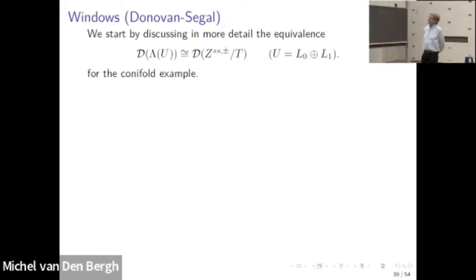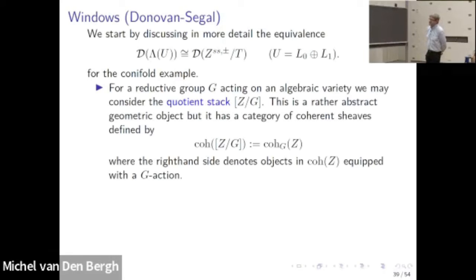Before I told you we have a derived equivalence — a non-commutative ring being derived equivalent to a resolution of a quotient singularity — but I didn't tell you what the equivalence was. One can construct the equivalence directly, but it's better to think about it from the point of view of windows. The concept of windows I will now explain is a version by Donovan and Segal, with more sophisticated versions by Halpern-Leistner and also by Ballard, Favero, and Katzarkov.